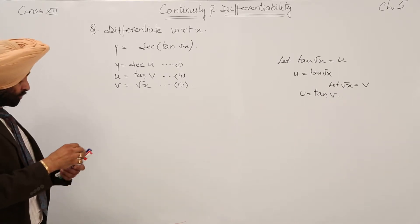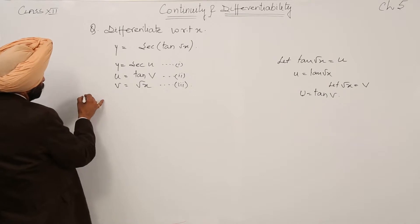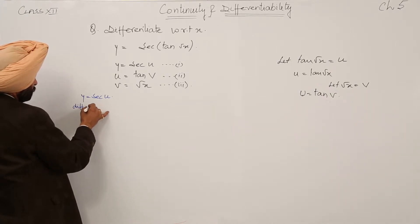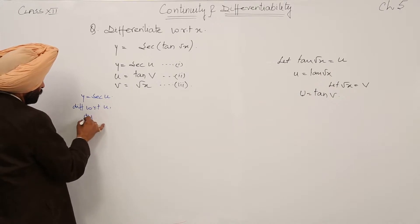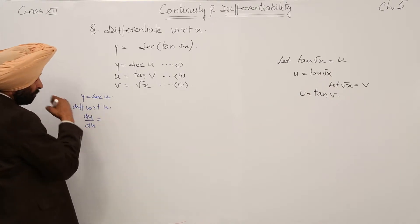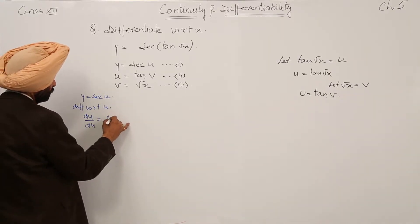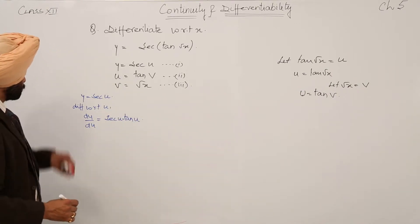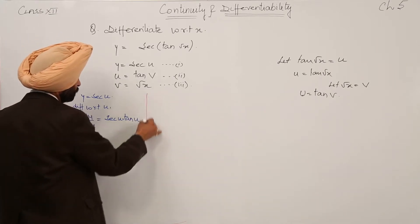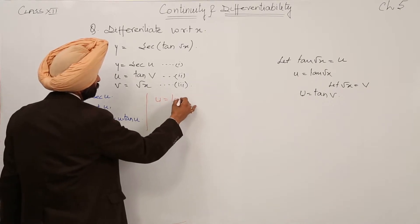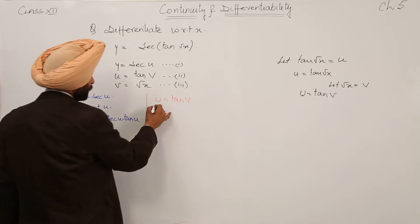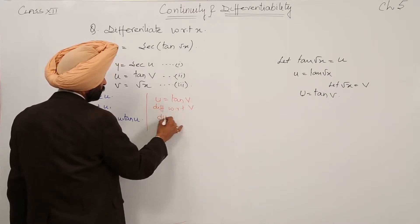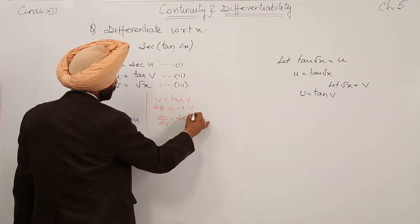This is a chain rule. For y equal to secant u, differentiating with respect to u, dy by du is equal to secant u tan u. Then for u equal to tan v, differentiating with respect to v, du by dv is equal to secant square v.